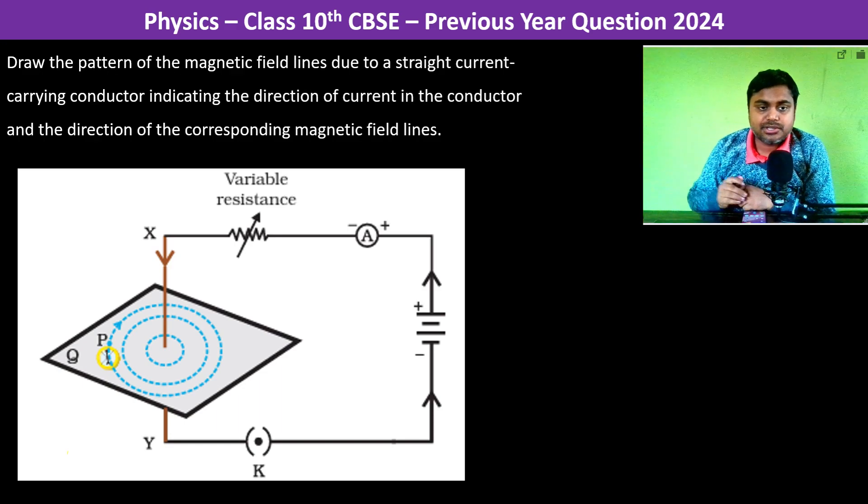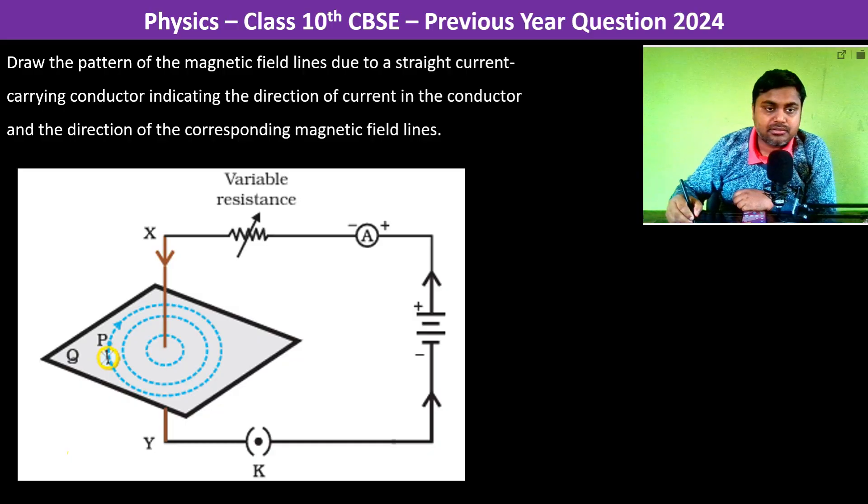The pattern of the magnetic field lines due to a straight current carrying conductor.